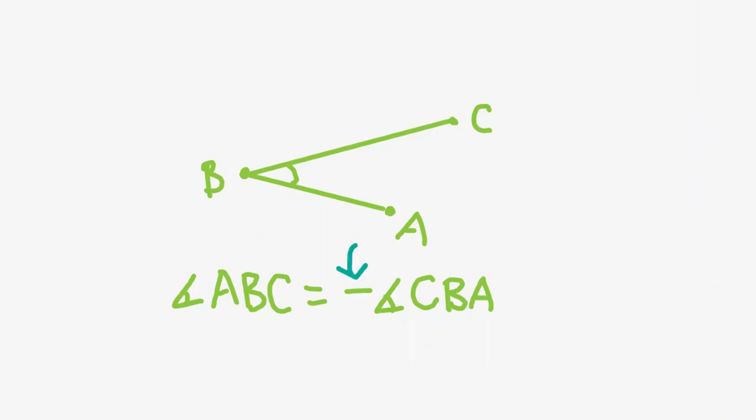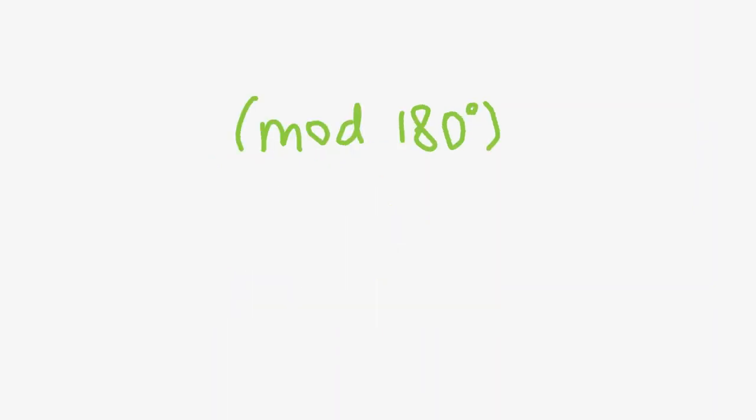Adding signs give more fidelity to angles as opposed to just taking the absolute value with normal angle conventions. In addition, we also usually take directed angles mod 180 degrees. Combining these two new conditions, we can get some interesting properties which we'll explore.